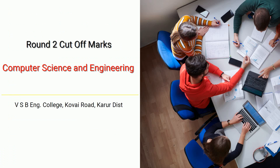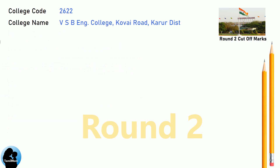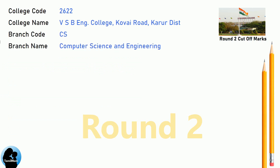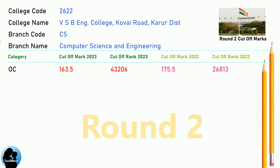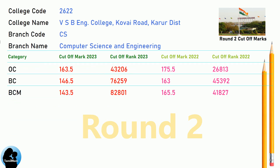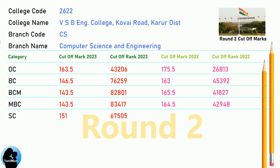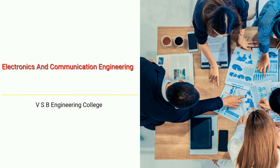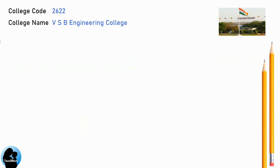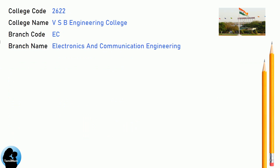DNA Round 1 Cut-Off for VSB Engineering College in Computer Science and Engineering. DNA Cut-Off for VSB Engineering College in Electronics and Communication Engineering.